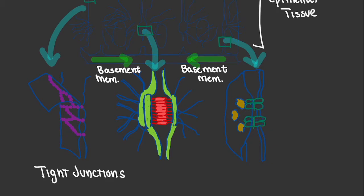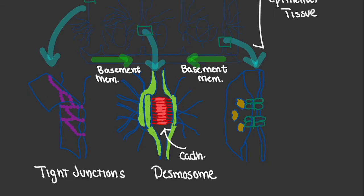Our second structure here is what we refer to as a desmosome. These desmosomes are responsible for linking multiple epithelial cells together, and by linking multiple epithelial cells together, that's what allows it to be called a tissue. If we were to look on the inside of this desmosome, we're going to find some special proteins that make this possible, and we call these special proteins cadherins.